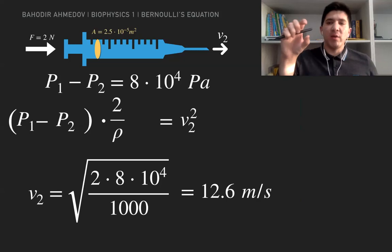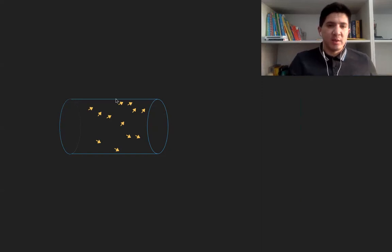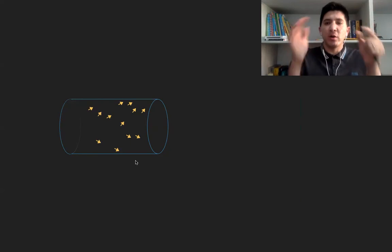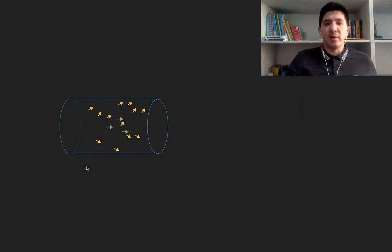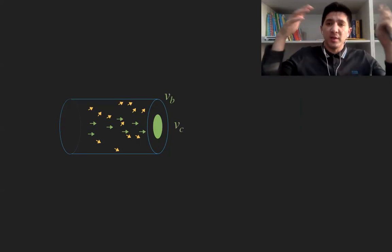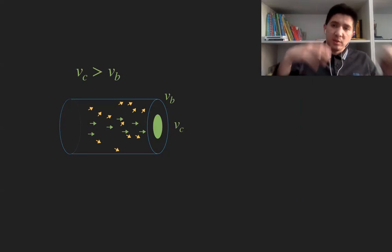So the Bernoulli equation allows us to find the velocity of the fluid at the end of the needle if we know the cross-section area and the force we are applying. Now let's discuss the flow of blood inside blood vessels. In a pipe, particles of the fluid at the borders interact more with each other — there is more friction at the borders than in the center. In the center, the particles move more or less freely, so the velocity in the center of the pipe is higher than at the borders.